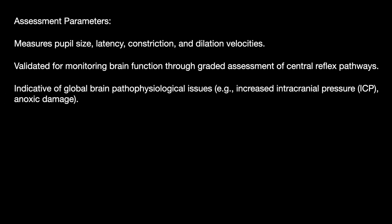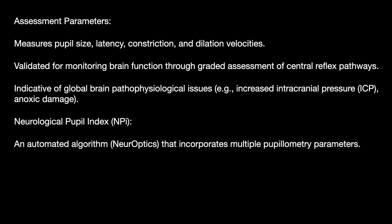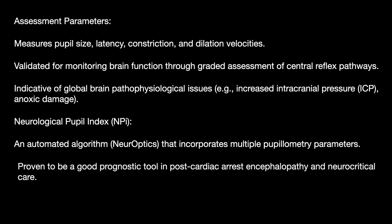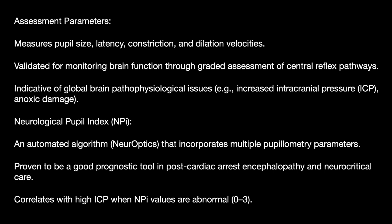Automated pupillometry is indicative of global brain pathophysiological issues like increased ICP and anoxic damage. The Neurological Pupillary Index is an automated algorithm that incorporates multiple pupillometry parameters. It is proven to be a good prognostic tool in post-cardiac arrest encephalopathy and neurocritical care. It correlates with high ICP when the Neurological Pupillary Index is abnormal, that is a value from 0 to 3.